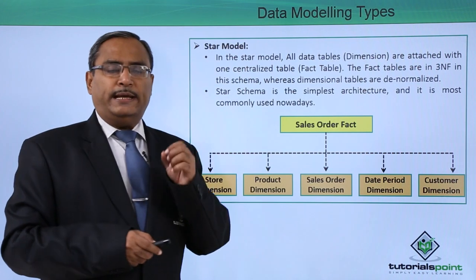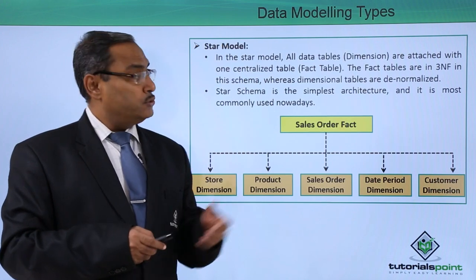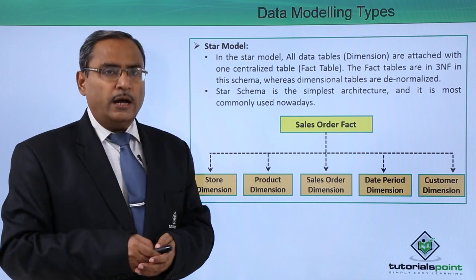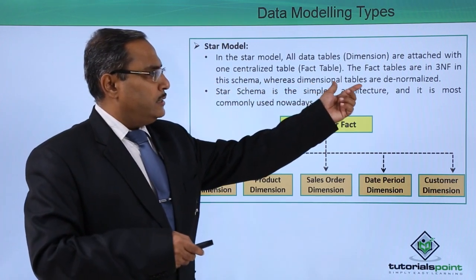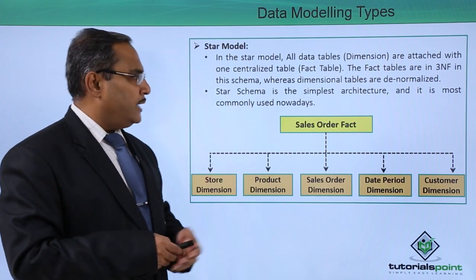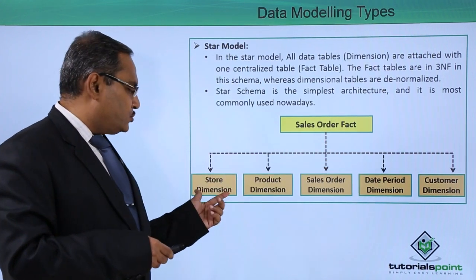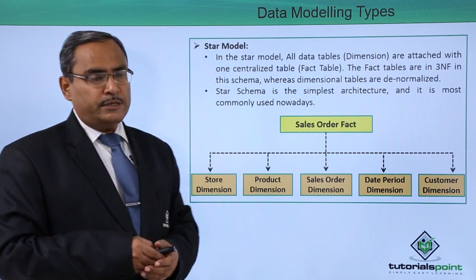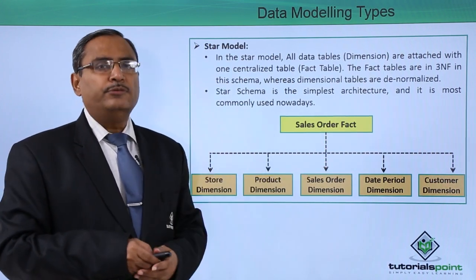The fact tables are in 3NF in this schema, whereas the dimension tables are denormalized. Star schema is the simplest architecture and is most commonly used nowadays. The dimension tables here include store dimension, product dimension, sales order dimension, date period dimension, and customer dimension — all in denormalized form.